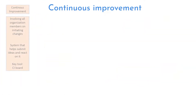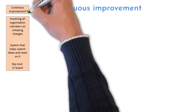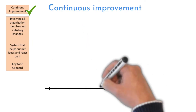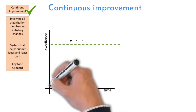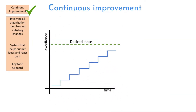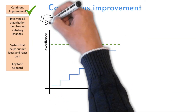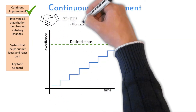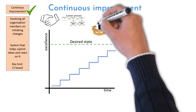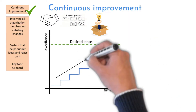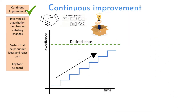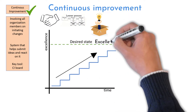Continuous improvement is an approach to be a little better every day. It is ceaseless and endless work on habits, processes, knowledge, or any human activity. We do incremental steps to reach a desired excellence state.